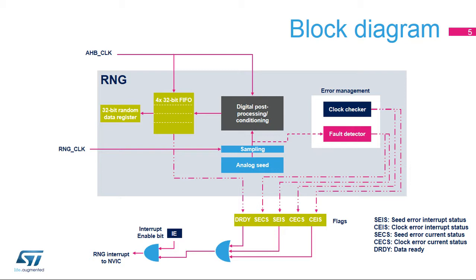The contents of the post-processing block are transferred into the data register through a four-word FIFO. The Data Ready flag (DRDY) is triggered as soon as the FIFO is full and is automatically reset when no more data can be read back from the RNG. In parallel, an error management block verifies the correct seed behavior and the frequency of the RNG source clock.